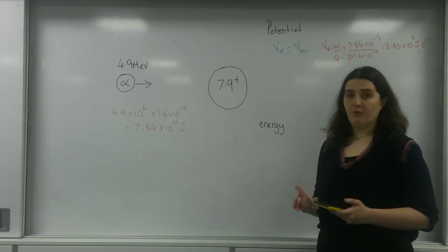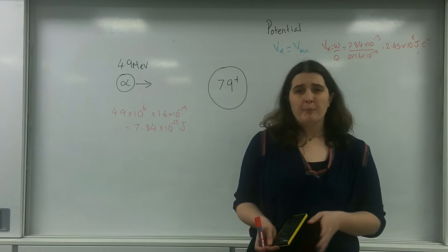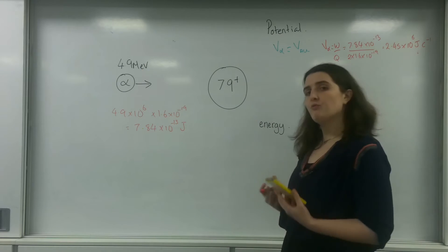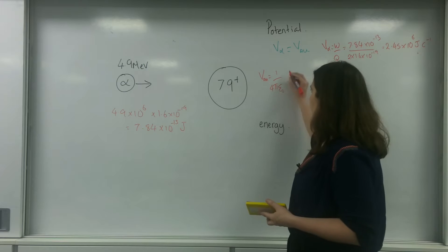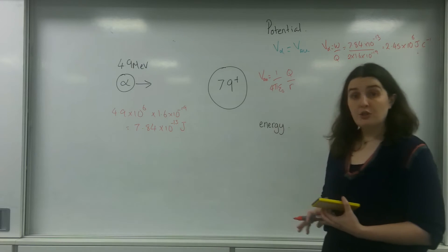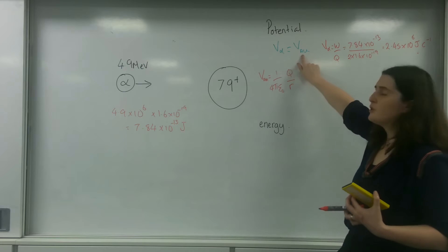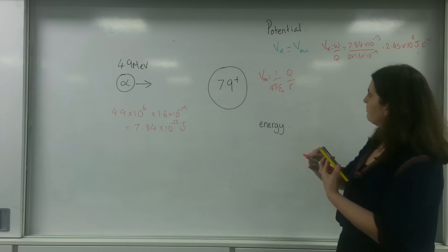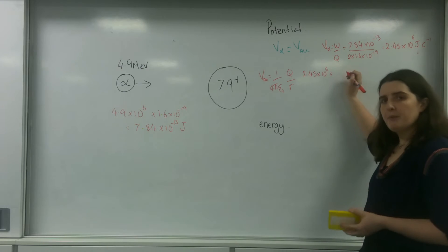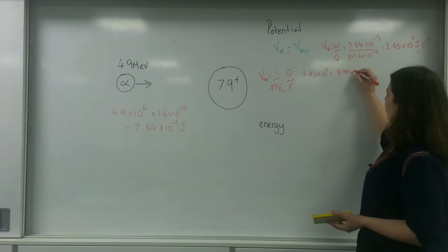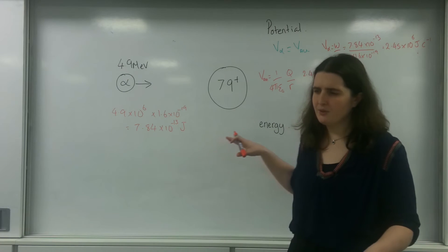That is the potential of the alpha particle. I want this potential to equal the potential of the gold. The gold has a radial field, and the formula for a radial field potential is 1 over 4 pi epsilon-0 times Q over R. This is useful because it contains the distance R. So I set 2.45 times 10 to the 6 equal to 1 over 4 pi epsilon-0, which equals 8.99 times 10 to the 9.